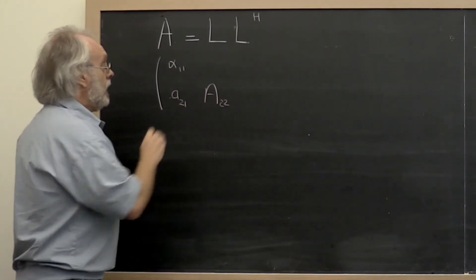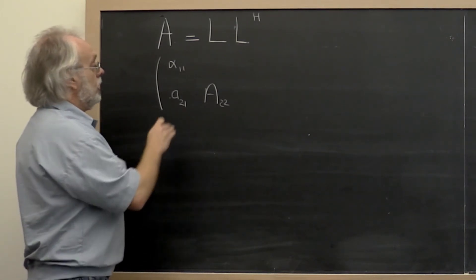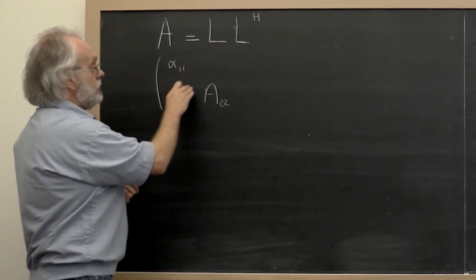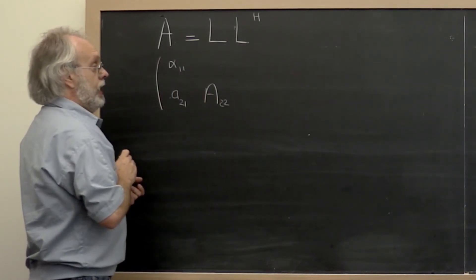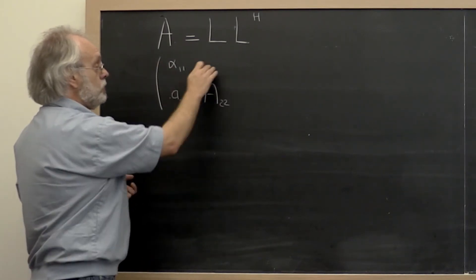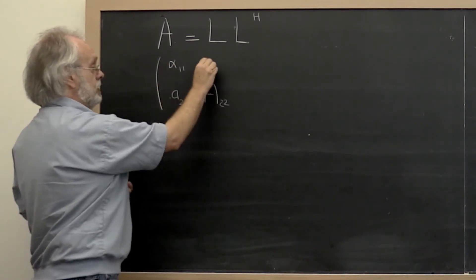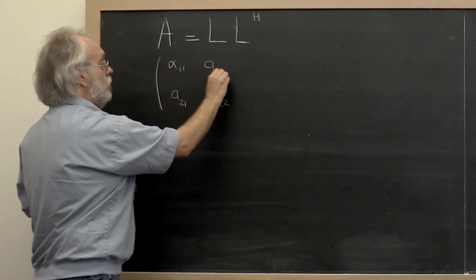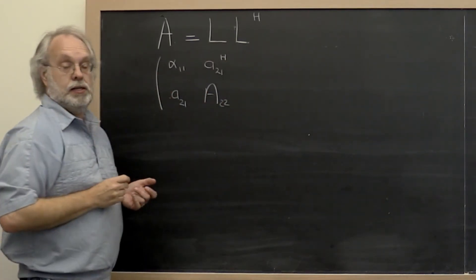Now because A is Hermitian, symmetric, whatever you want to call it, notice that we only need to store the lower triangular part. And from what is stored in the lower triangular part, we can deduce what's in the upper triangle. And in particular, when we partition it like this, we know that A_2,1 Hermitian has to be here at the top.